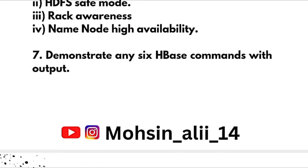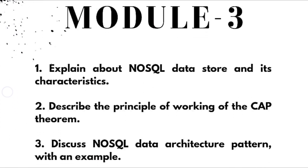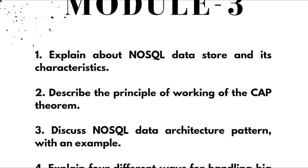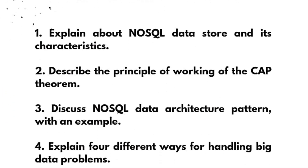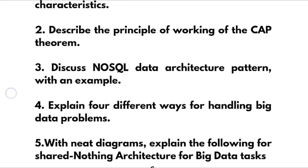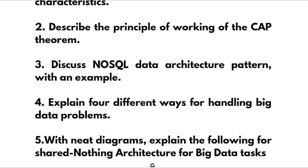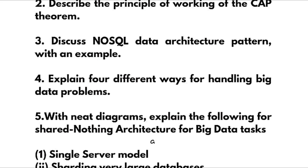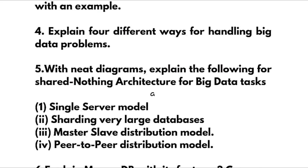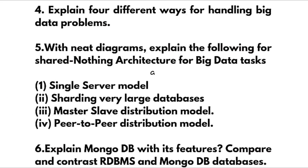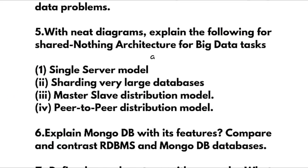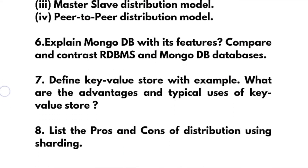For Module 3, explain NoSQL data store and its characteristics. Describe the principle of working of the CAP theorem. Discuss NoSQL data architecture patterns with an example. Explain 4 different ways for handling big data problems — this is a super important question from the 18 scheme that is continuously being asked. With neat diagrams, explain the following shared-nothing architecture for big data tasks: single server model, sharding very large databases, master-slave distribution model, and peer-to-peer distribution model.